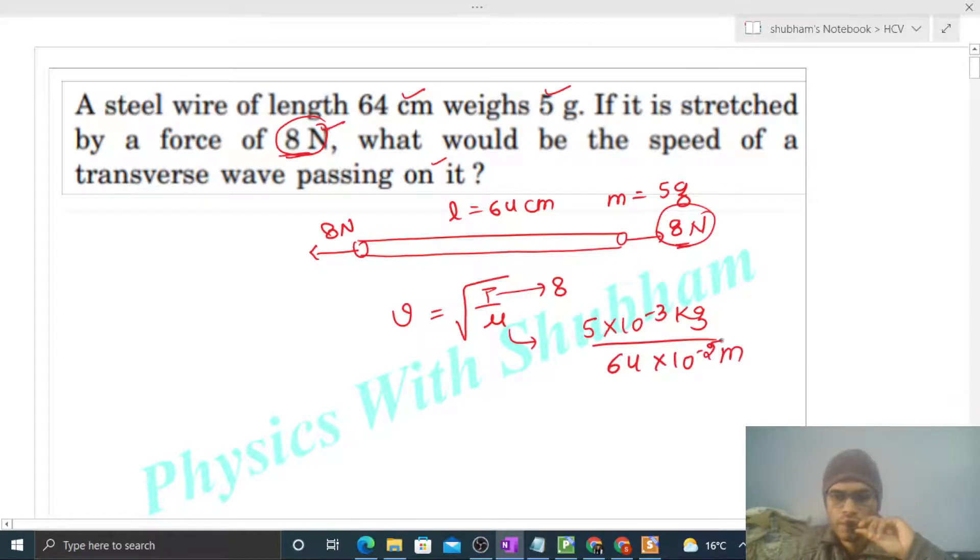When I say units, my value put. So mu I got, that will be simply 5 divided by 640. So just put the values, tension will be 8 divided by mu that is 5 over 640.